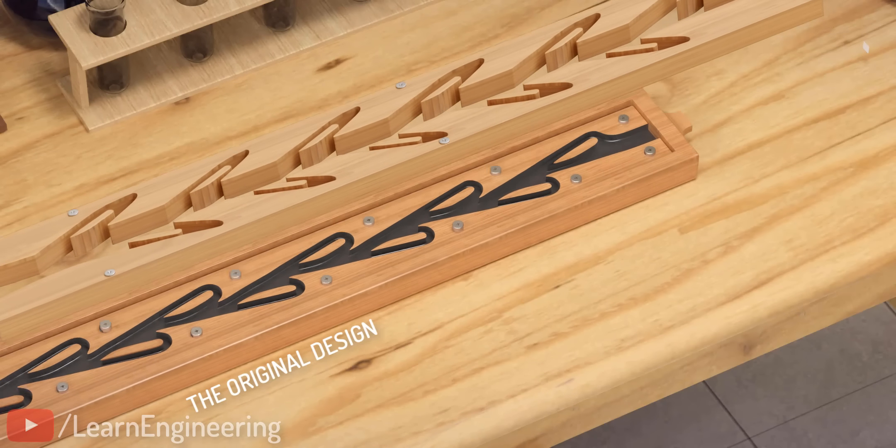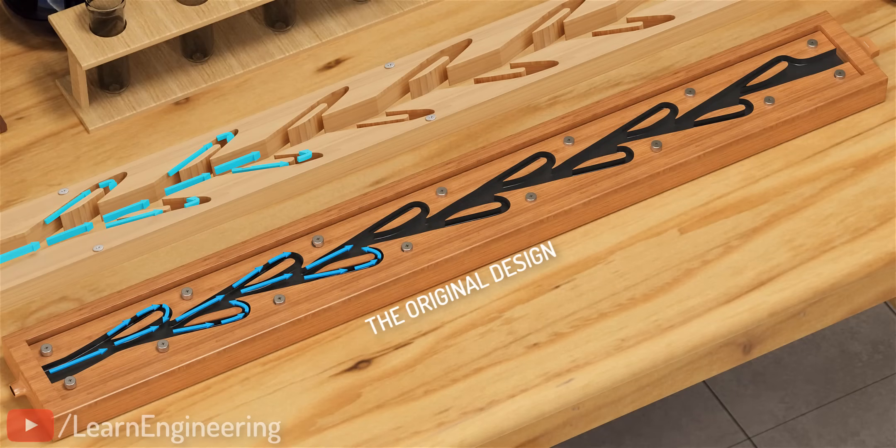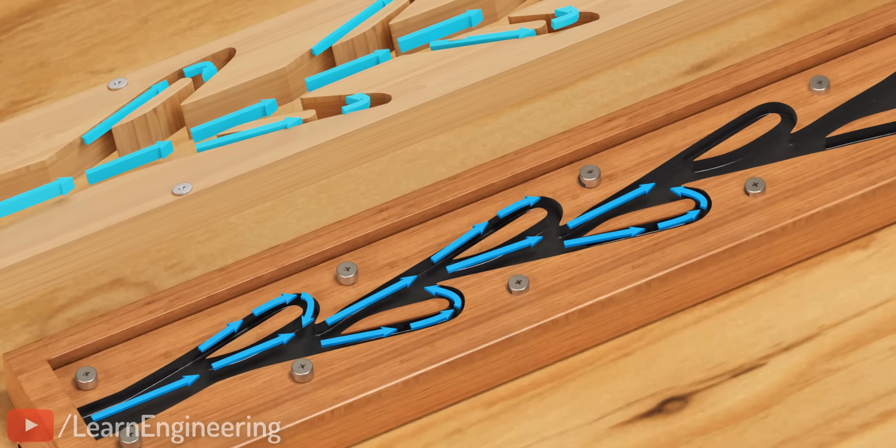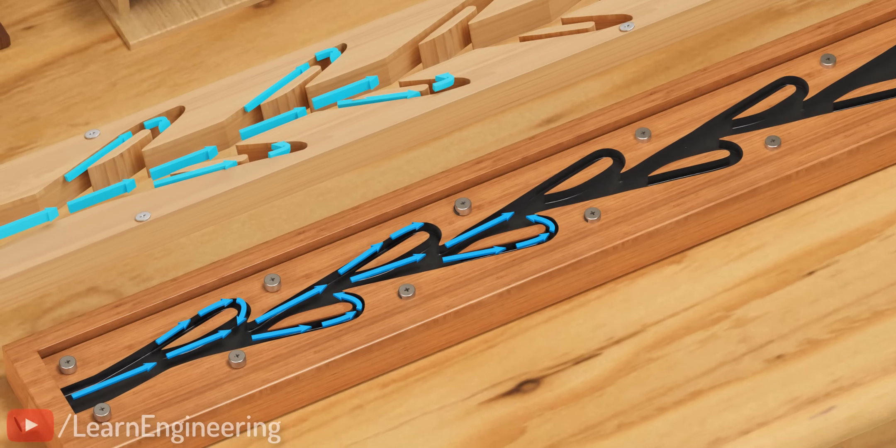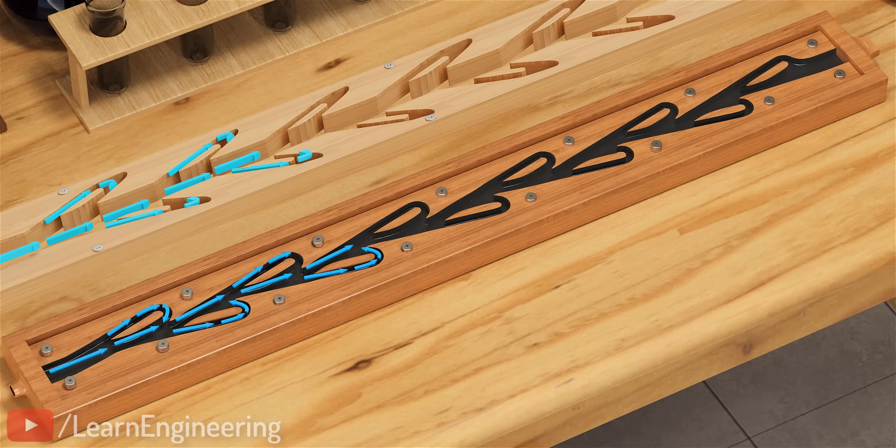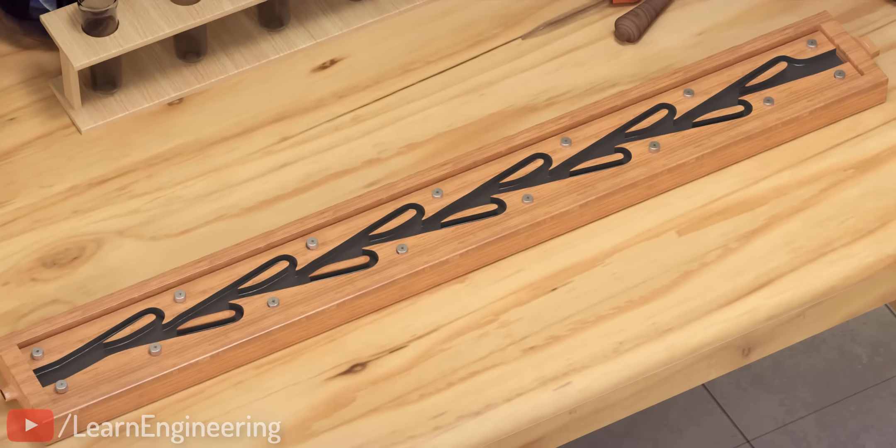In the Tesla valve, the flow is always divided into two streams. The straight-line flow is the primary stream, and the diverted flow is the secondary stream. In his design, Nikola Tesla cleverly integrated all the interesting fluid mechanics we have learned so far in an optimum way. Now, let's see the detailed fluid mechanics of the Tesla valve.